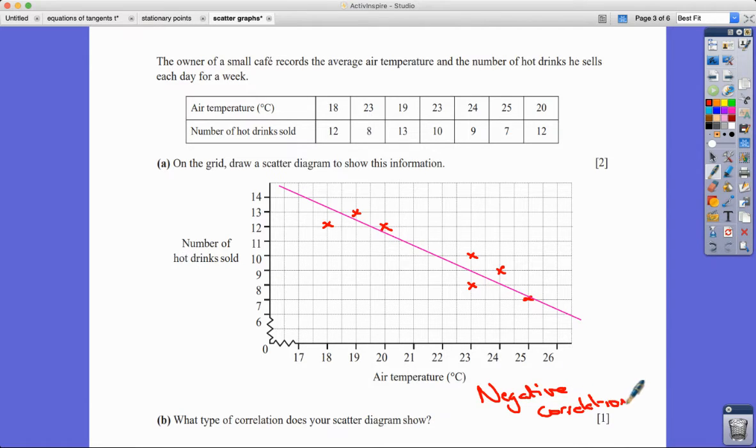So if you're telling the story about what's happening here, as the temperature increases the number of hot drinks sold decreases, which I suppose would make sense. The warmer you get, maybe the less likely you are to fancy a hot drink. More like a cold drink I imagine. So that's the three mark question.